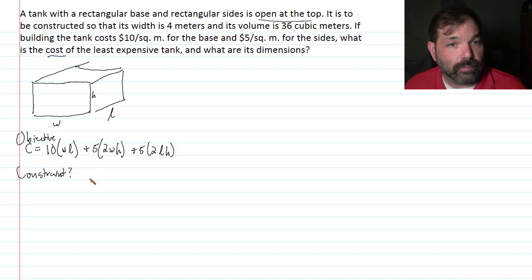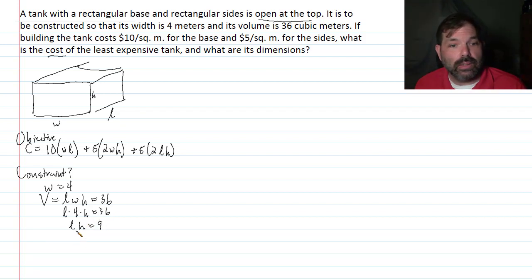We're told that the width is 4 meters and the volume is 36 cubic meters. The volume of a rectangular solid is its length times its width times its height. And I know that must be 36. So if W equals 4, then I have L times 4 times H is 36. So then L times H is 9, dividing both sides by 4.